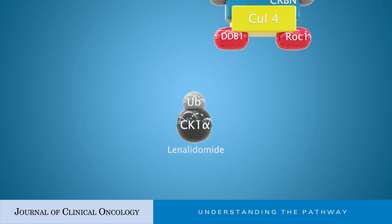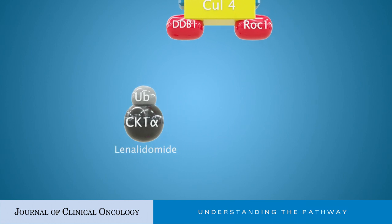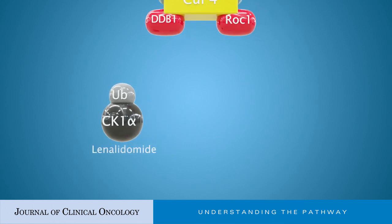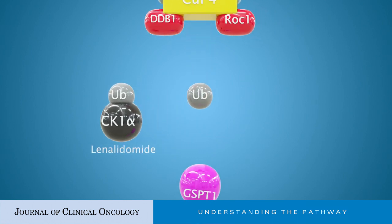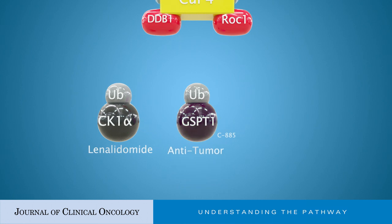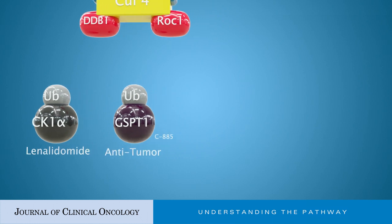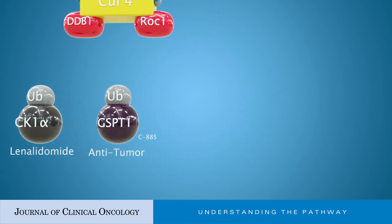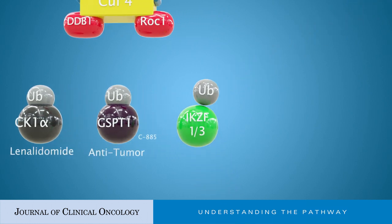CellMod CC885 seems to selectively mediate the ubiquitination and degradation of the translation termination factor GSPT1, which leads to tumor killing.